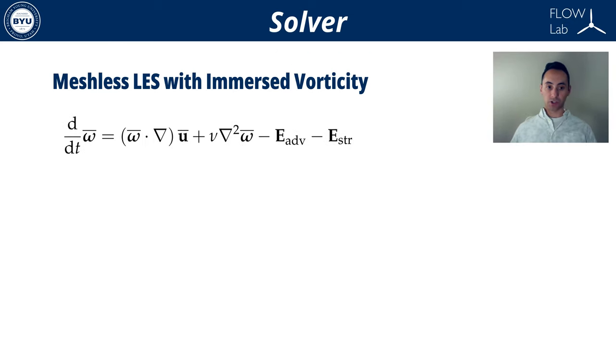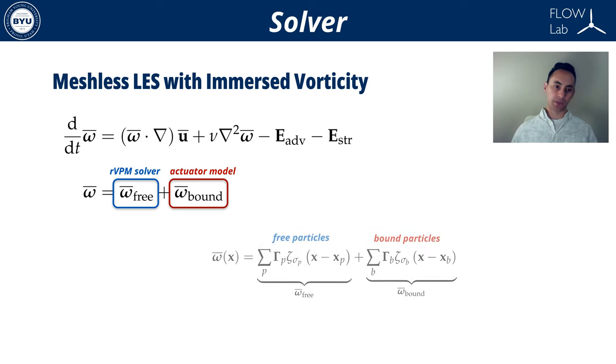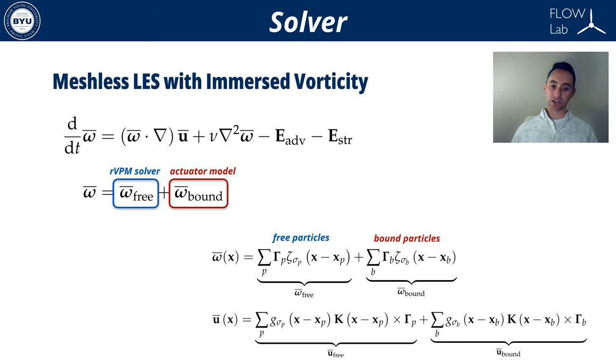In order to introduce solid surfaces in the computational domain, the vorticity field is decomposed into free vorticity and vorticity that is bound to a surface. The evolution of the free vorticity is calculated by the reformulated VPM while the bound vorticity is computed by actuator models. Both components are discretized through vortex particles.